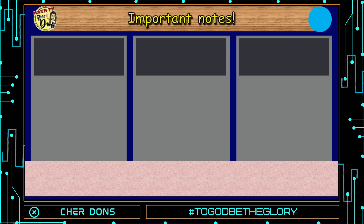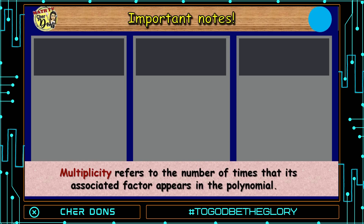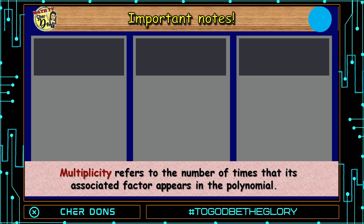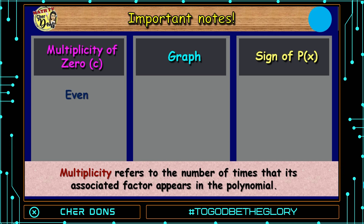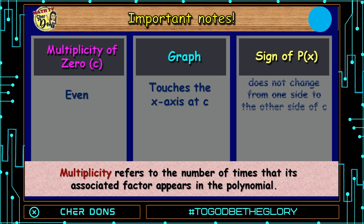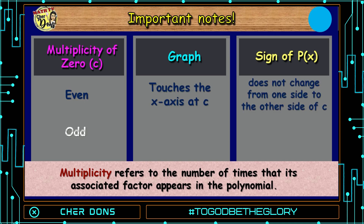Next, we have multiplicity. Multiplicity refers to the number of times that its associated factor appears in the polynomial. Take note: if the multiplicity is even, it will touch the x-axis. And if it's odd, it will cross the x-axis.